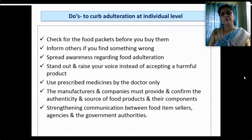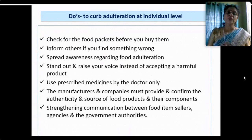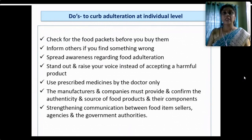What are the do's to curb adulteration at the individual level? Check food packets before you buy them — very important. How many of us actually read label information before buying a product? In developed countries even small children go through label information before picking up a product. We as educated people must do the same — not just check the expiry date or date of manufacture, but read all label details. Inform others if you find something wrong; spread awareness regarding food adulteration; stand out and raise your voice instead of accepting a harmful product.